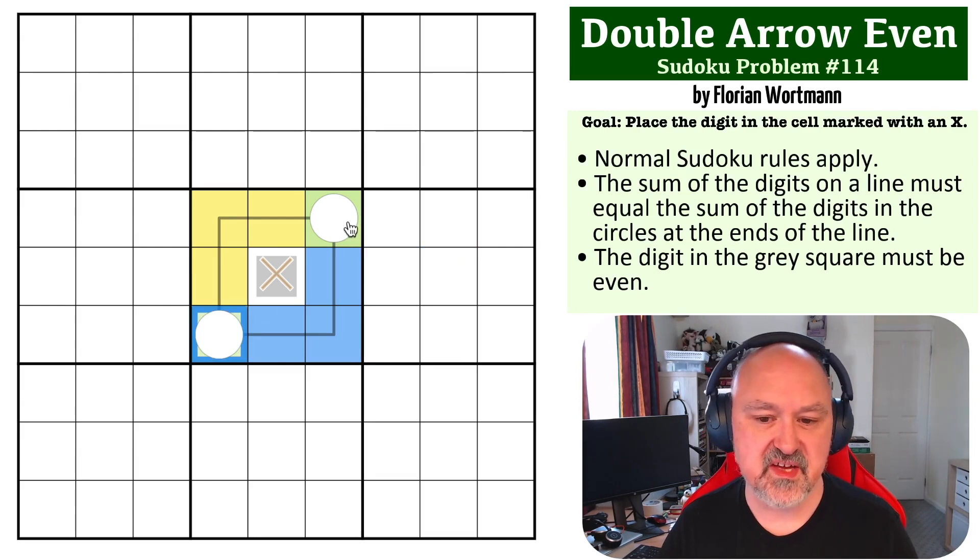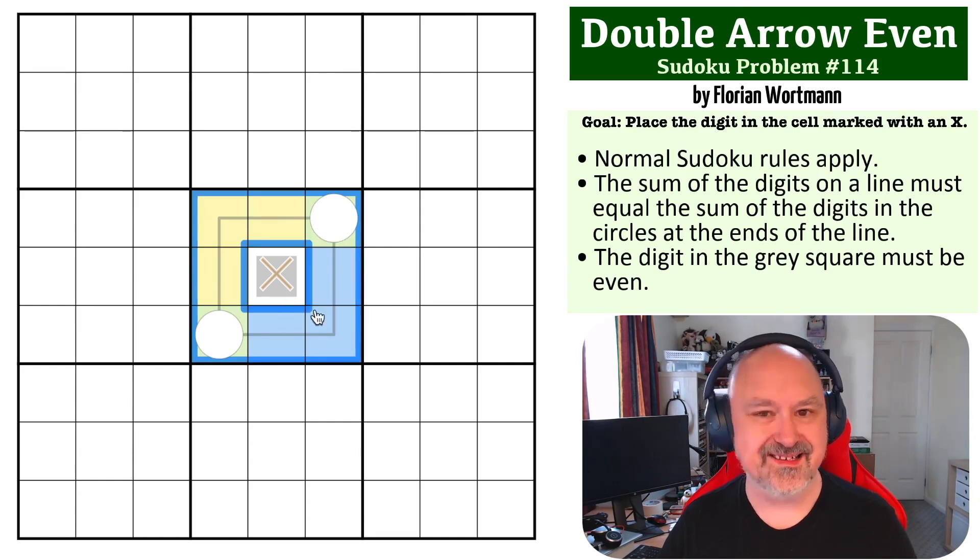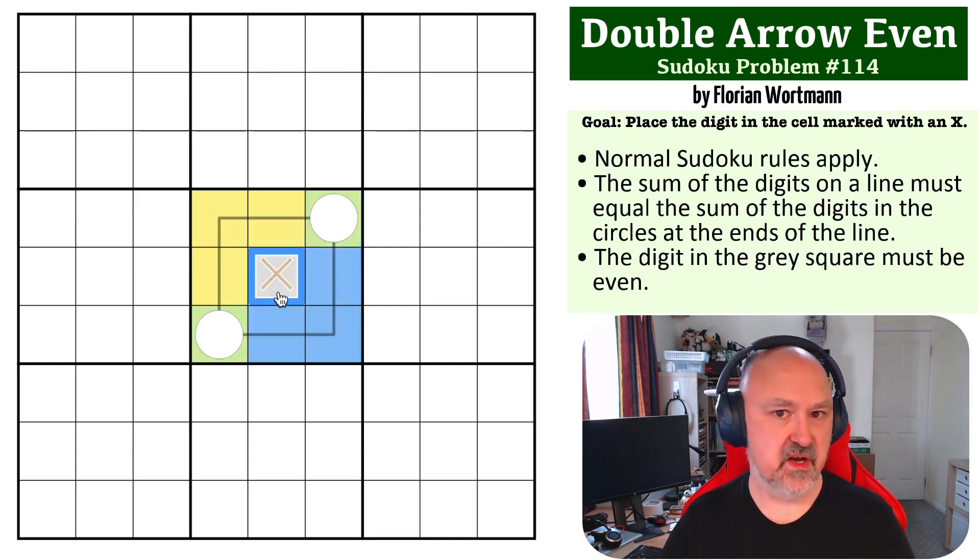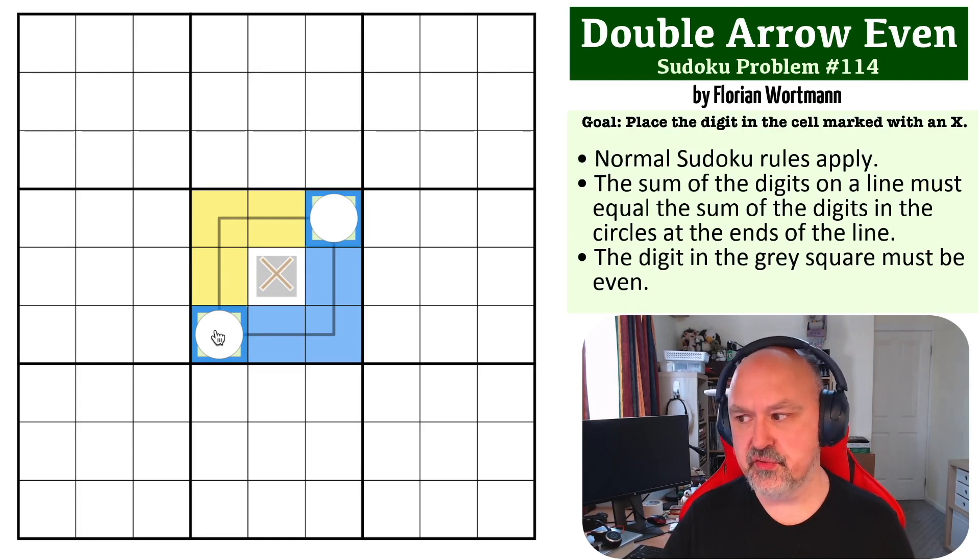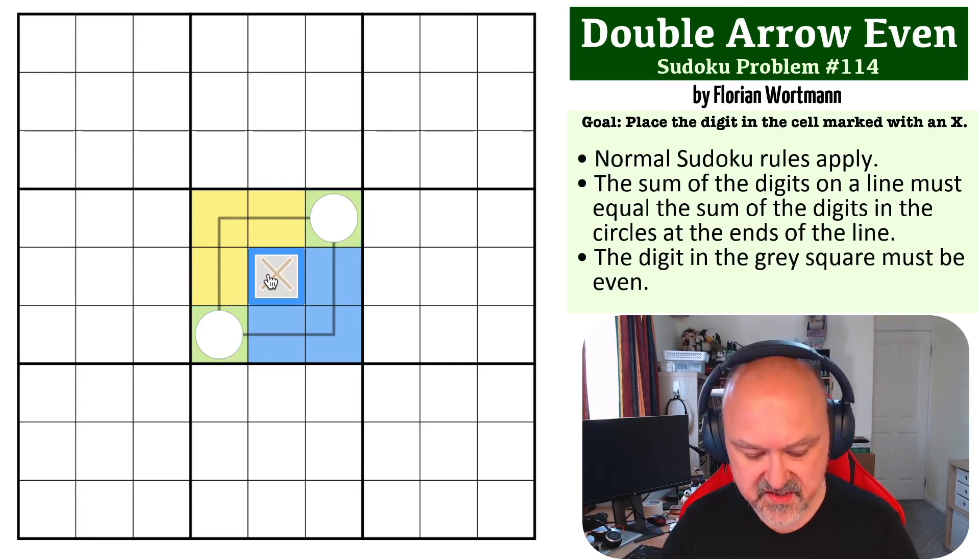If these were 11, we would know that this entire thing would sum to 33, and to get to the 45 this would have to be a 12—that's not going to work. If this is a 12, then these all together would sum to 36, and this central digit would have to be a 9. Well, that's not even, that's not going to work.